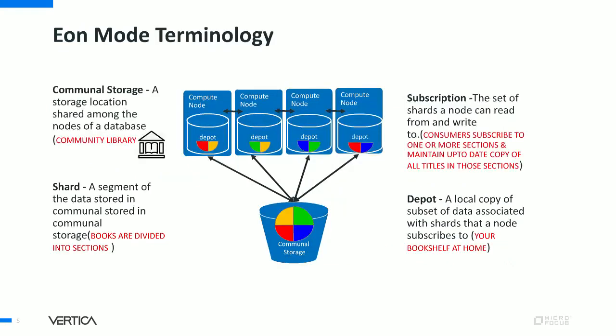Eon Mode is suitable for cloud deployment. Some customers are also deploying on-premise using Eon Mode by introducing S3-compliant Flashblade storage. Let's look at some of the terminologies used in Eon Mode. Communal storage is a shared S3-compliant storage bucket accessible from all nodes in your cluster. A shard is a segment of data stored on communal storage.